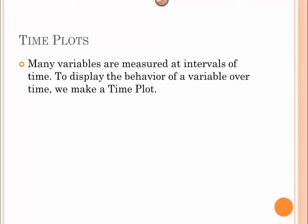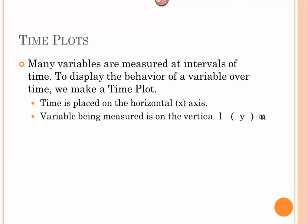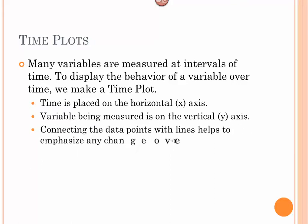In a time plot, the time is placed on the horizontal axis. The variable that's being measured is put on the y-axis. When we look at a time plot, we're connecting the data points at certain intervals to emphasize the change over time.